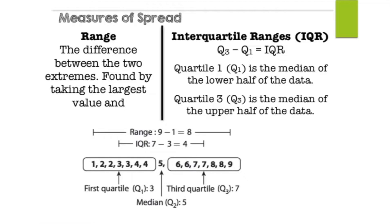To measure the spread, you have two ways depending on the type of data: range and interquartile range. Range is found by subtracting the lowest value from the highest value. Make sure the data is in order from least to greatest. In the example, the data set is 1, 2, 2, 3, 3, 4, 4, 5, 6, 6, 7, 7, 8, 8, 9, so the range is 9 minus 1, which equals 8.